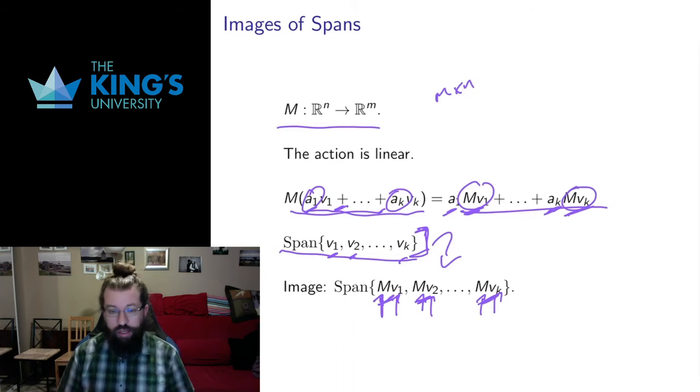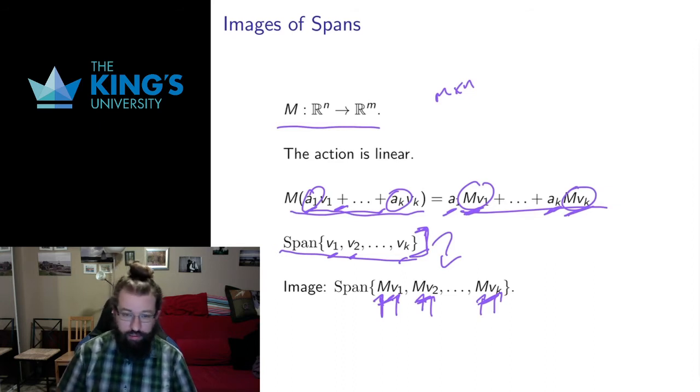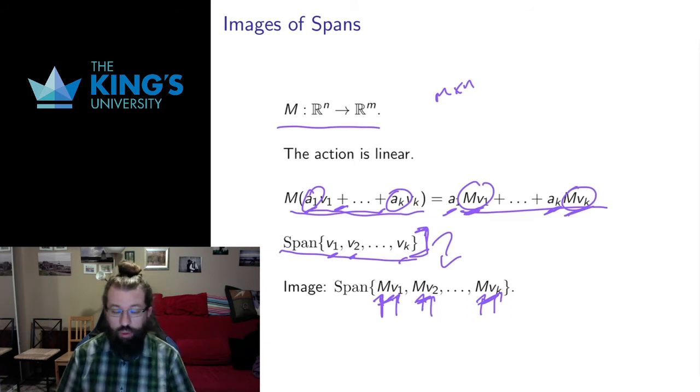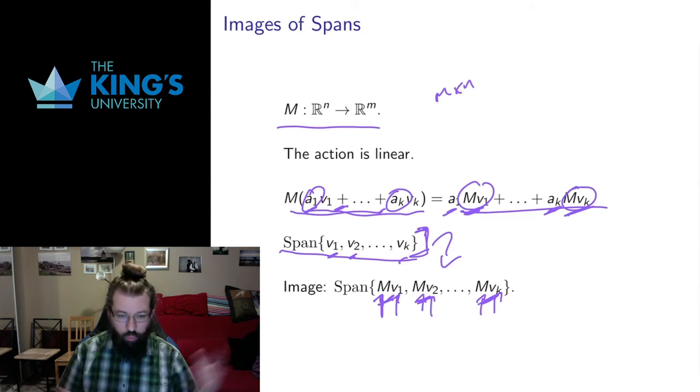And what this establishes is that spans go to spans. And this is really, really lovely. Transformations work very well with spans. Where does the span go to? You just take a spanning set, take a basis, figure out where that basis goes to, and you get the span of that new basis. That's where this span is going to go to. Now it's a little bit complicated, whether or not the dimension is preserved, we'll get into those kind of questions later. But the really nice thing is that spans go to spans.